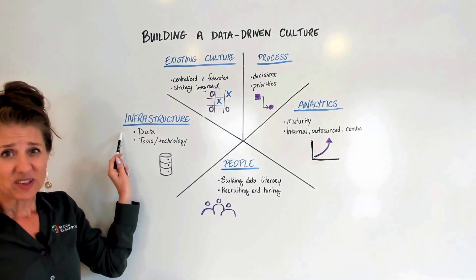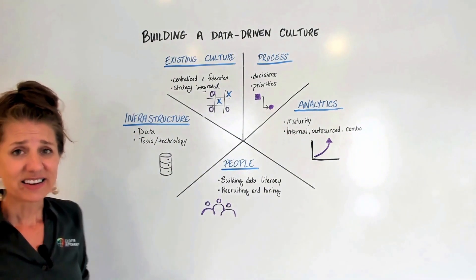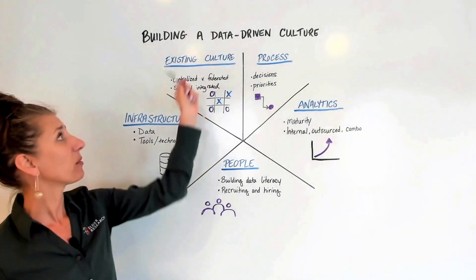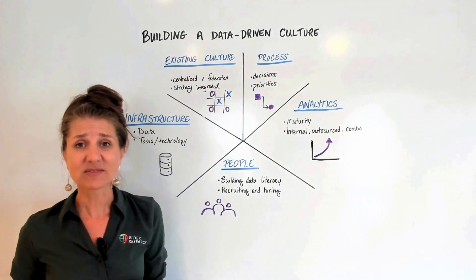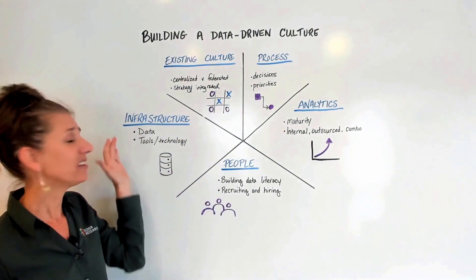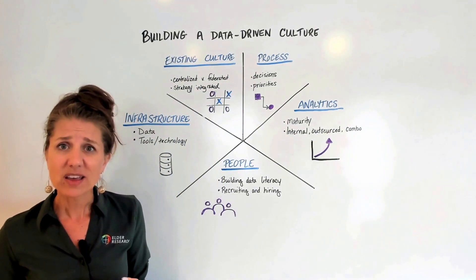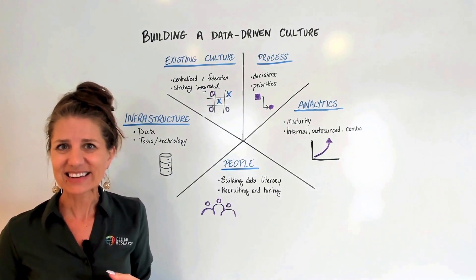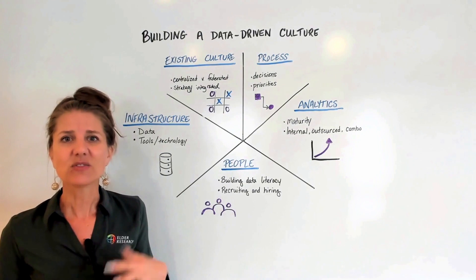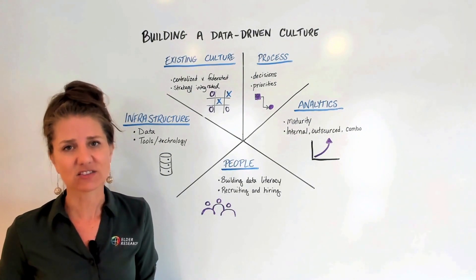Infrastructure is another piece to take a look at. Data is foundational to good decisions. That's why we want to be data-driven cultures, right? And so we need to take a look at that data and understand where it's coming from. Make sure it's clean data. It's not missing. We're not using bad data to inform bad decisions.